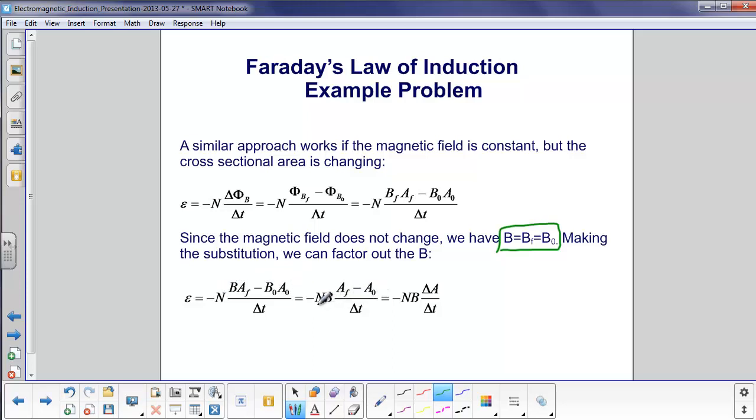And then we will have minus NB times the change in area. And we're left with this version of Faraday, which is minus NB delta A over delta T. And actually, this zero doesn't belong here. We should have substituted that out.